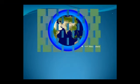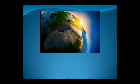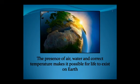Planet Earth is surrounded by a layer of air known as atmosphere. The air that we breathe is a part of atmosphere. So, the presence of air, water and correct temperature makes it possible for life to exist on Earth.